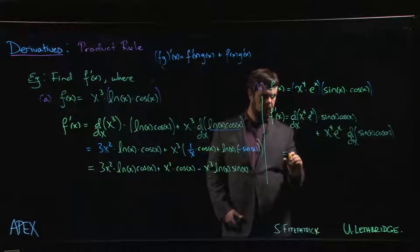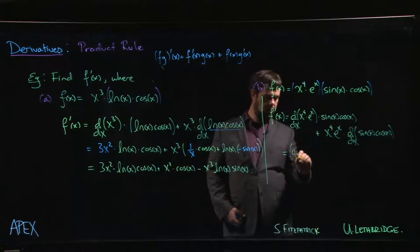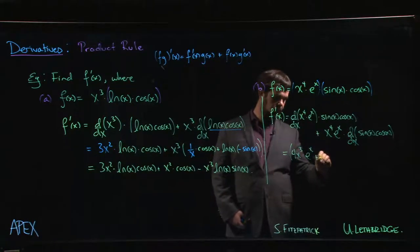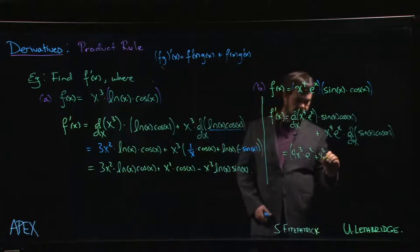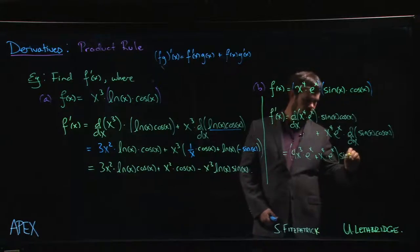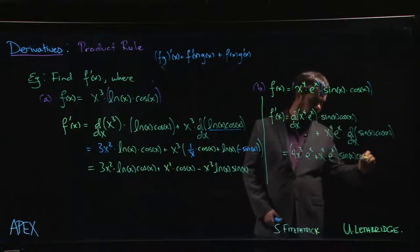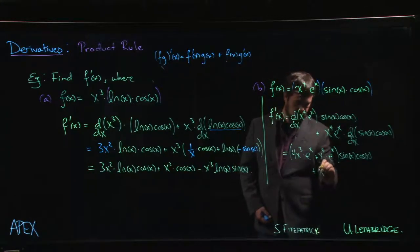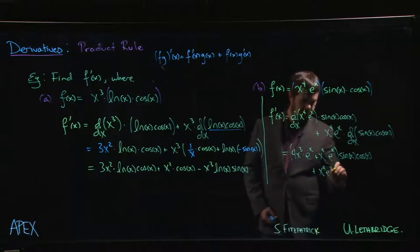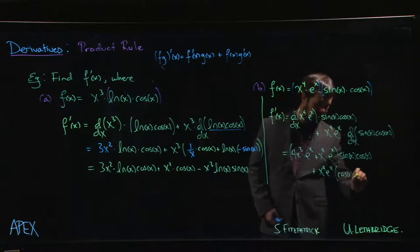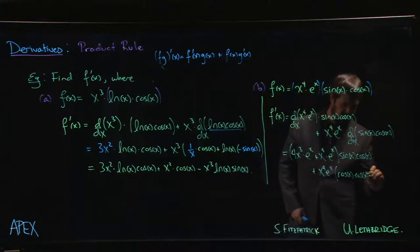The derivative of x⁴ is 4x³, times eˣ, plus x⁴ times the derivative of eˣ — which is just eˣ — all times sin x · cos x. Plus x⁴ · eˣ times the derivative of (sin x · cos x).